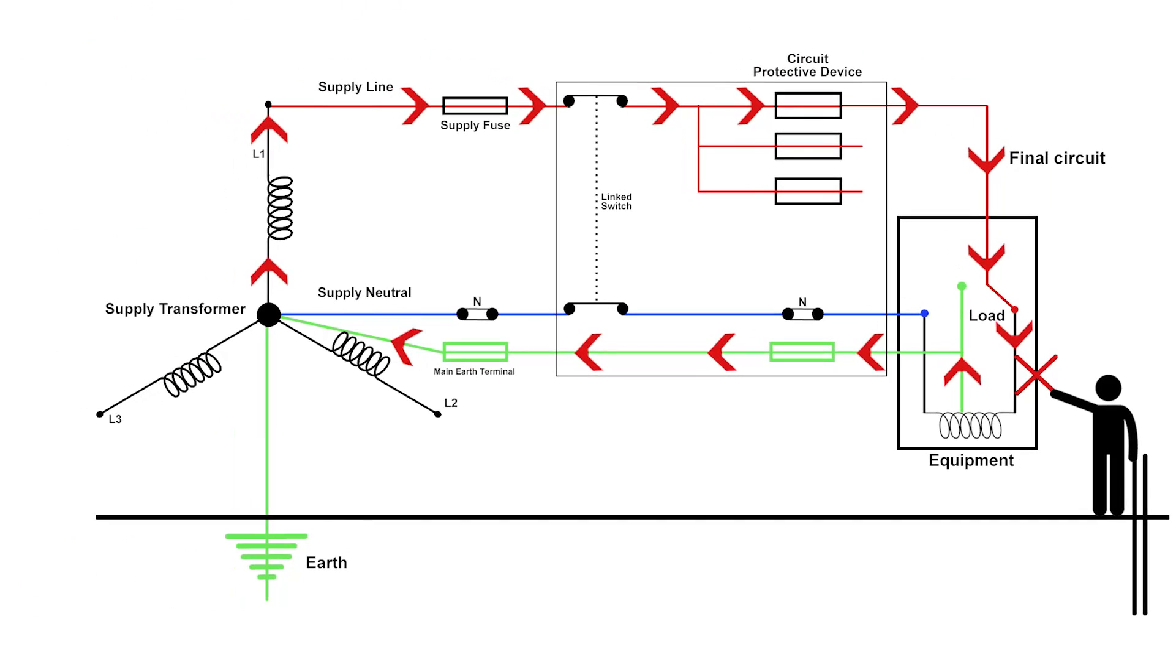Now a 20 amp type B protective device—and in fact any type B protective device—requires a maximum of five times its current rating to operate it, and it must operate within 0.1 of a second. That's the way the product standard says they have to be made. So if I've got a 20 amp device, 5 times 20 means that a hundred amps will have to flow through this system before that device will operate.